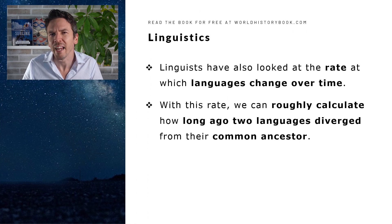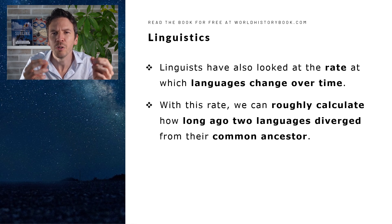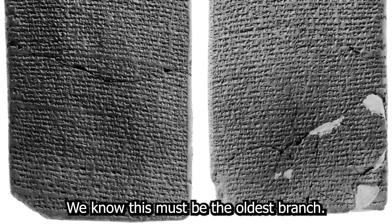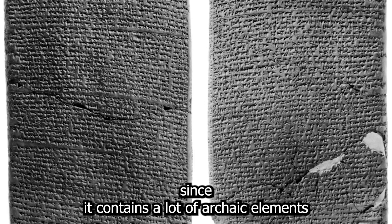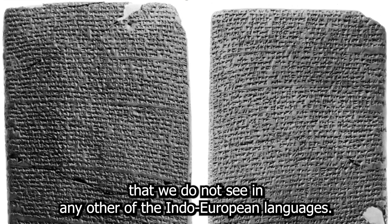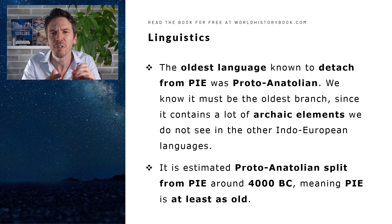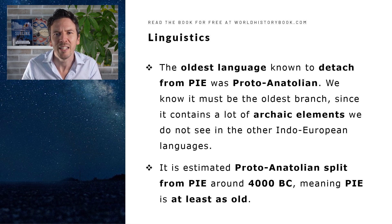Linguists have also looked at the rate at which languages change over time. With this rate, we can roughly calculate how long ago two languages diverged from a common ancestor. The oldest language to detach from PIE was Proto-Anatolian, spoken in what is now Turkey. We know this must be the oldest branch since it contains a lot of archaic elements that we do not see in any other of the Indo-European languages. By studying the difference between Proto-Anatolian and the other Indo-European languages, and using that rate of change, it has been determined that the Proto-Anatolian split from PIE must have occurred around 4000 BC, very roughly, meaning that PIE is at least as old as this, and likely much older.